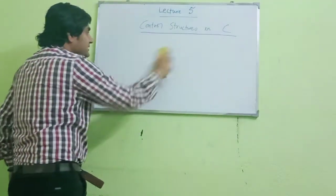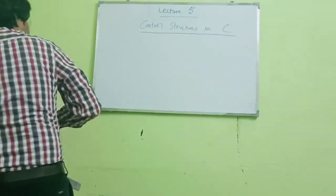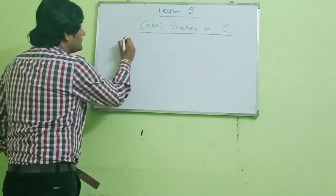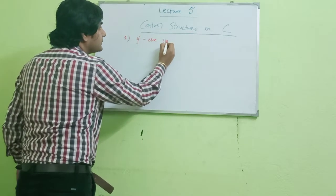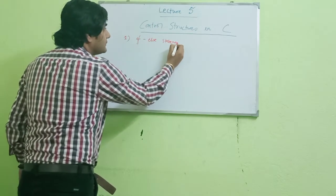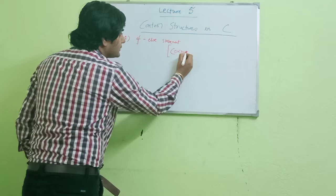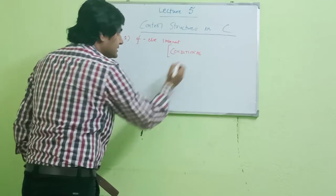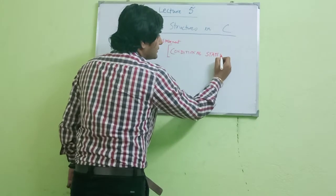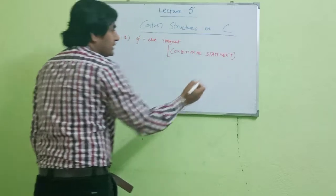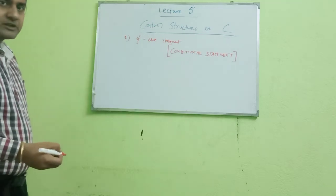The control structures in C programming language are: first, the if-else statement. This is a conditional statement. I will explain this conditional statement — this is the first one, the if-else statement, or the conditional statement.